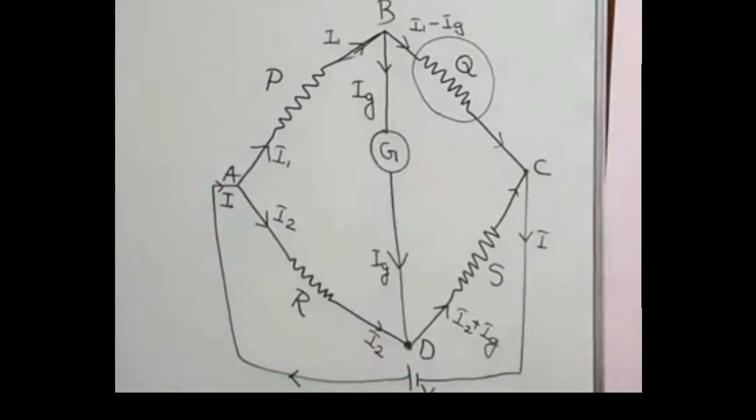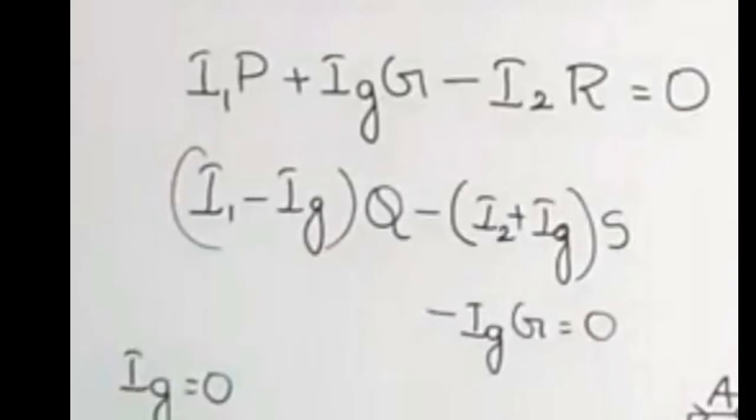The current through DB is in the opposite direction. Completing the second loop equation: (I2 + IG)·S minus (I1 − IG)·Q minus IG·G equals zero. These are the two KVL equations describing the Wheatstone Bridge circuit.